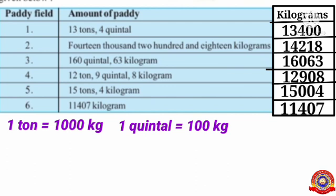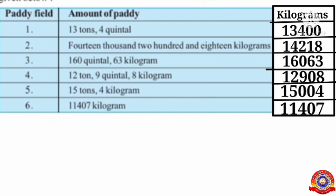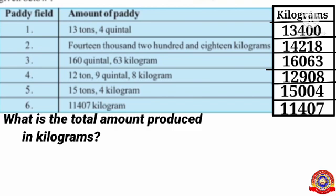The sixth field got 11,407 kilograms of paddy. Children, see this question: what is the total amount produced in kilograms? To find out this, add these amounts.